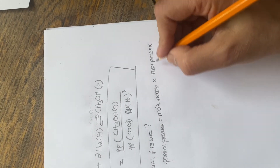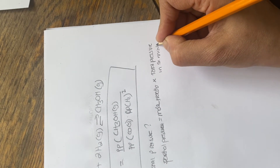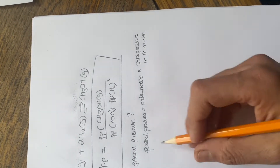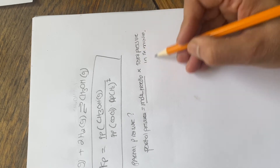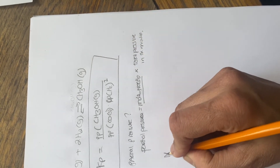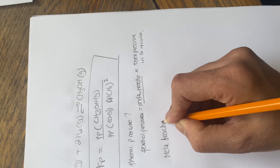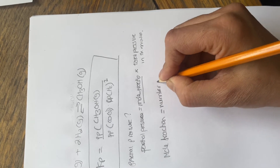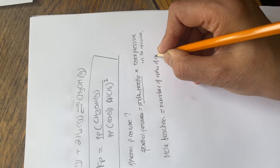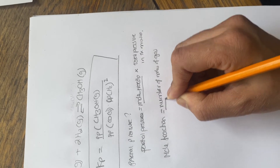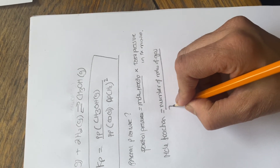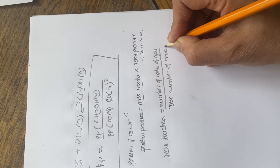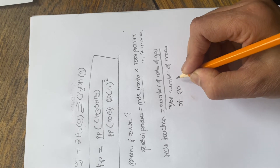Once you have that, the first thing to do is work out the mole fraction. Mole fraction is the number of moles of a particular gas divided by the total number of moles of gas in the mixture.